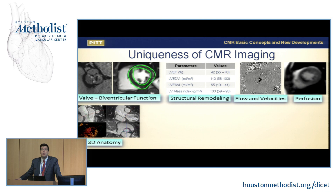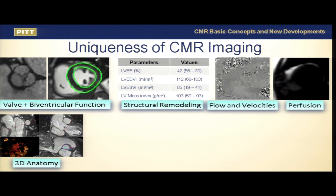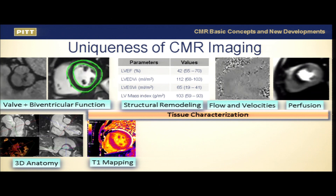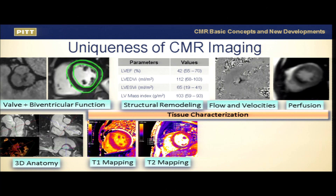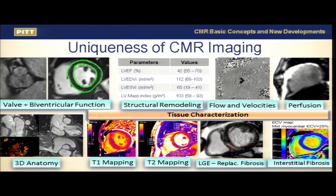We can look at 3D anatomy similar to CT, and we've been using this in selected patients for TAVR planning because we do not require intravenous contrast — patients with advanced chronic kidney disease can undergo TAVR planning with CMR. Tissue characterization has really been exploding the field, with the capability to measure fibrosis with T1 mapping, myocardial edema and inflammation with T2 mapping, replacement fibrosis with late gadolinium enhancement, and diffuse fibrosis using the extracellular volume fraction.